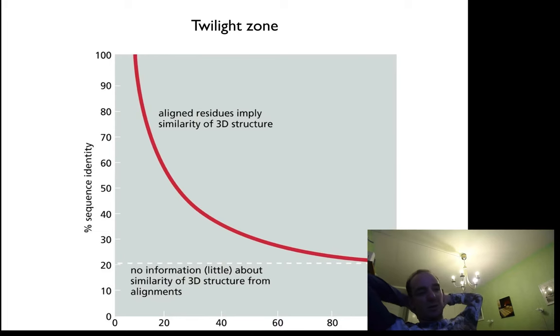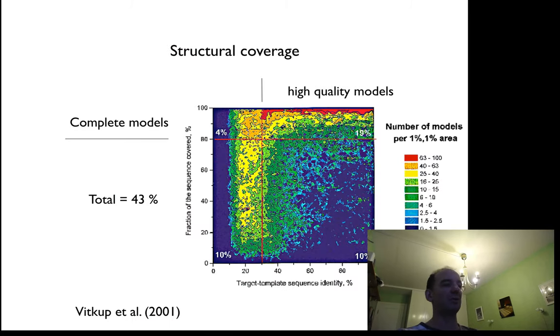But in general, if you have coverage of 100% and 20% sequence identity or more, you can have a good model. Otherwise, if you don't have coverage of the whole protein, you might have worse models. So it also depends on how long the alignments are. So 20% is a rough indication still.